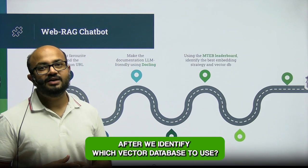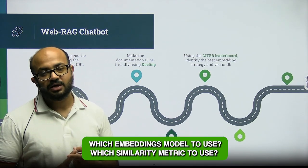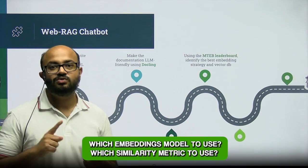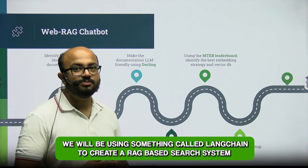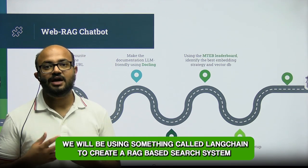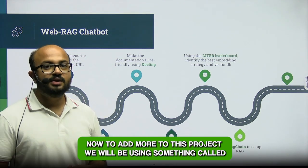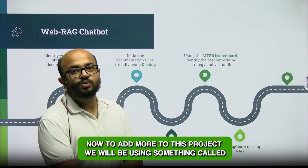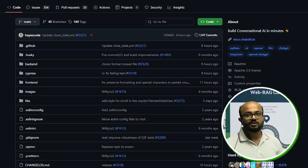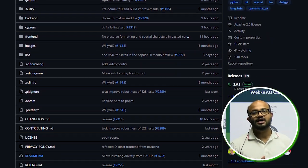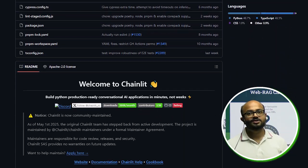After we identify which vector database to use, which embedding model to use, and which similarity metric to use, we will be using LangChain to create a RAG-based search system. To add more to this project, we will be using something called Chainlit to create a chatbot UI very quickly for the system.